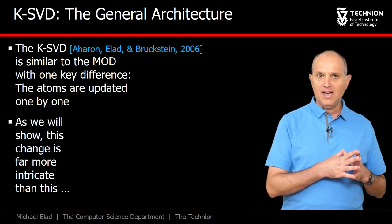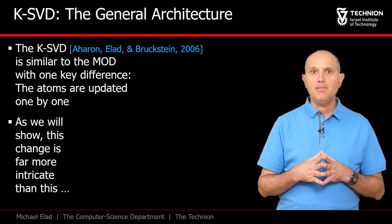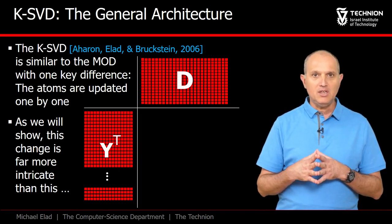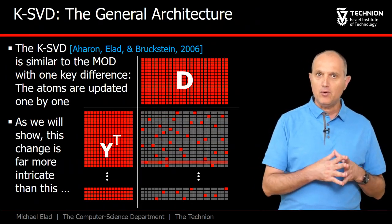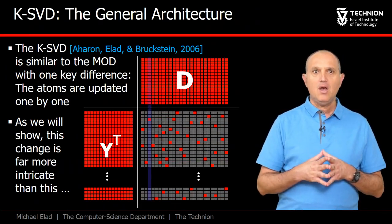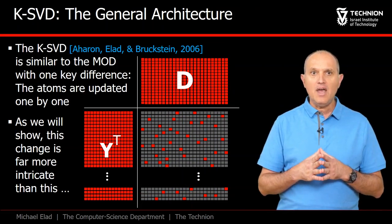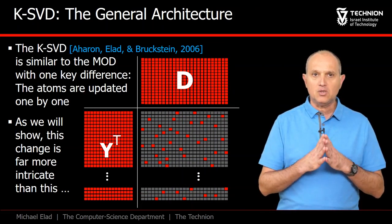Alongside the update of the atoms, we will be updating the elements in A multiplying them. And so just like in the MOD, KSVD updates A row by row by a pursuit algorithm. However, when time comes to update D, this will be done one column at a time with modifications to A as well.